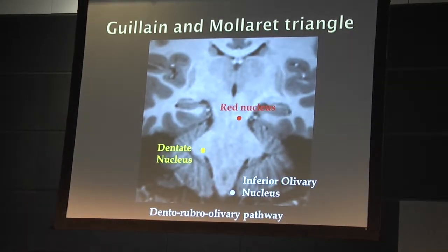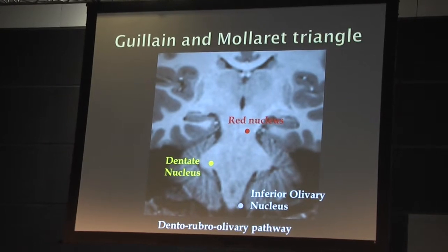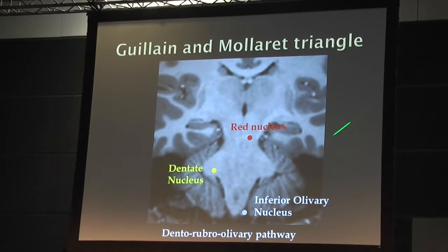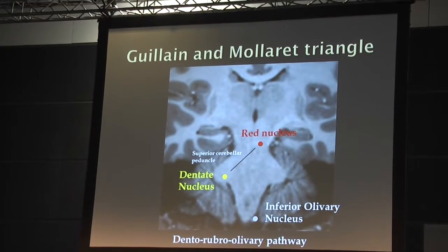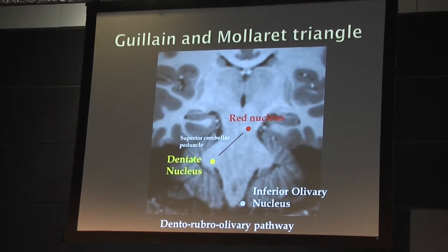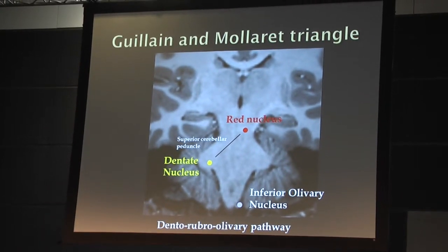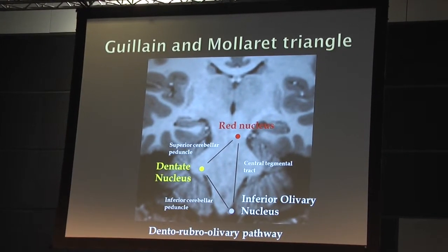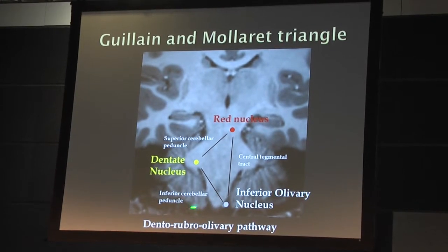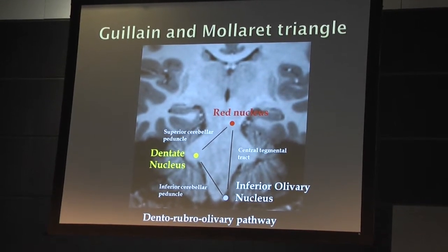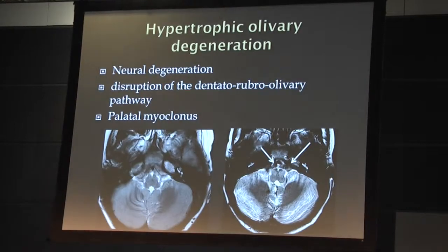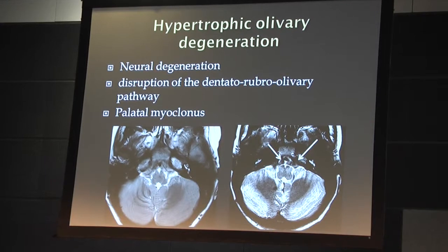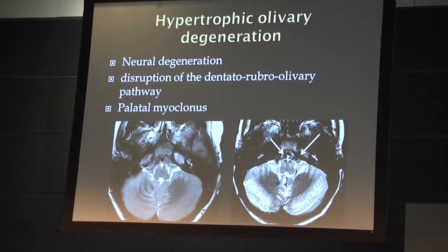I'd like to throw light on a different pathway — also called the Guillain-Mollaret triangle. This joins three areas: the dentate nucleus, which sends efferents to the red nucleus on the contralateral side via the superior cerebellar peduncle; then the central tegmental tract, which joins the red nucleus to the inferior olivary nucleus; which then sends efferents back to the dentate nucleus. What's been known is that you can have a condition of neural degeneration when there is a disruption of the dentorubro-olivary pathway.